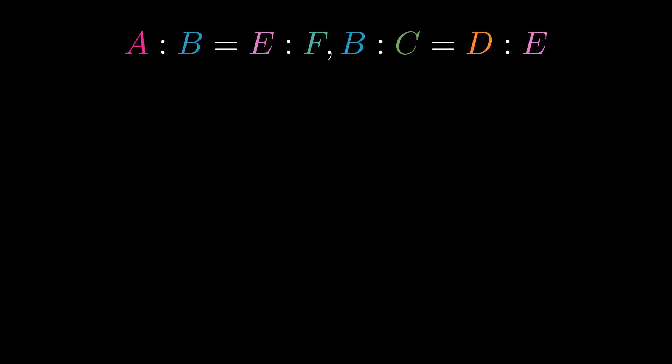Let A to B be proportional to E to F and B to C be proportional to D to E. What we want to show is that the ex-equally ratios are also proportional, or that A to C is proportional to D to F.